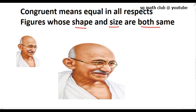Congruent means equal in all respects. Congruent figures are those figures whose shape and size both are the same. Such figures are called congruent figures. These two photographs of Gandhaji are not congruent because one is small and the other is big. If two figures are said to be congruent, they should have the same shape as well as the same size. Congruent means they should be equal in all respects — their shape and size should be same.